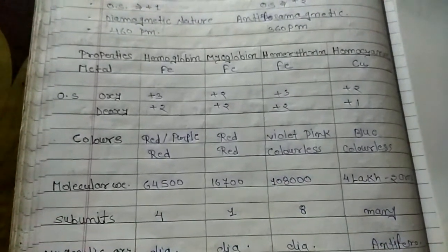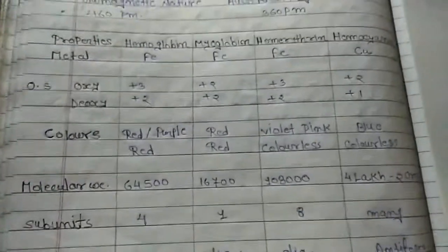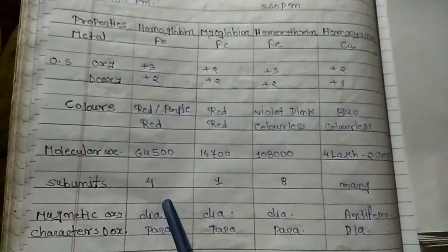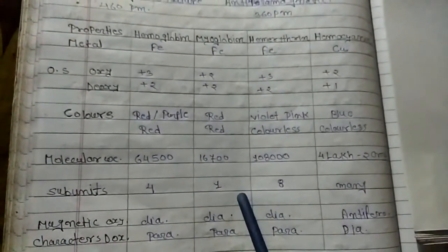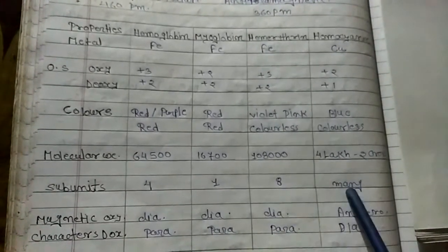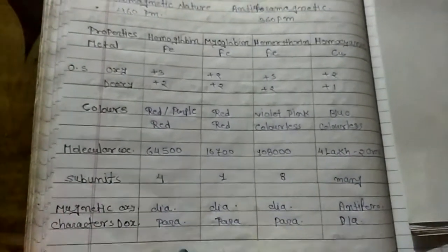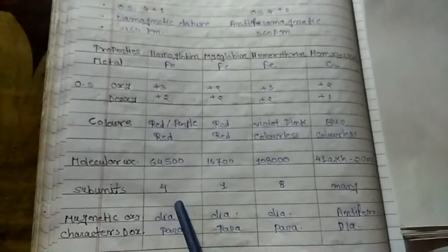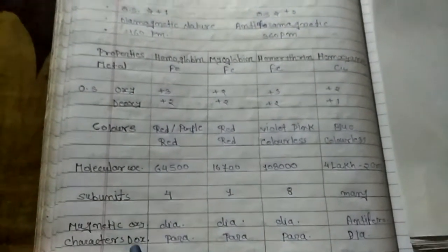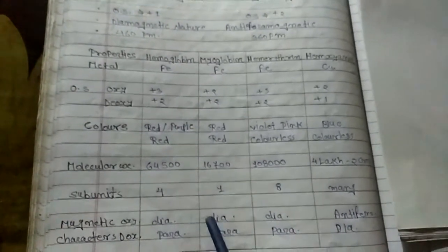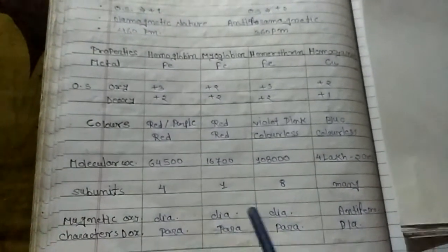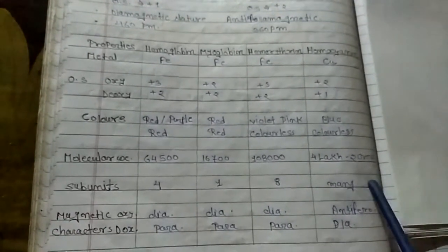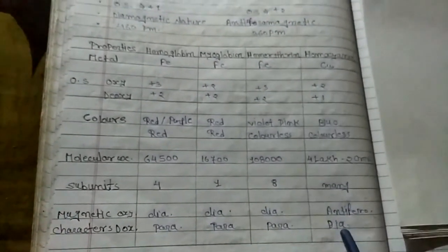For subunits: hemoglobin has four subunits, myoglobin one unit, hemerythrin eight, and hemocyanin many. For magnetic properties: hemoglobin and myoglobin can be diamagnetic in oxy form, while hemerythrin and hemocyanin show antiferromagnetic coupling.